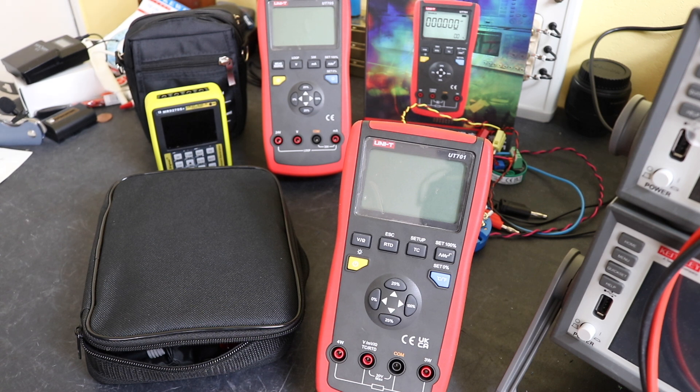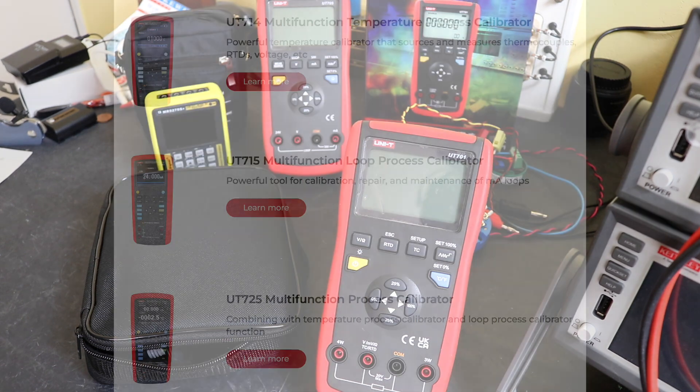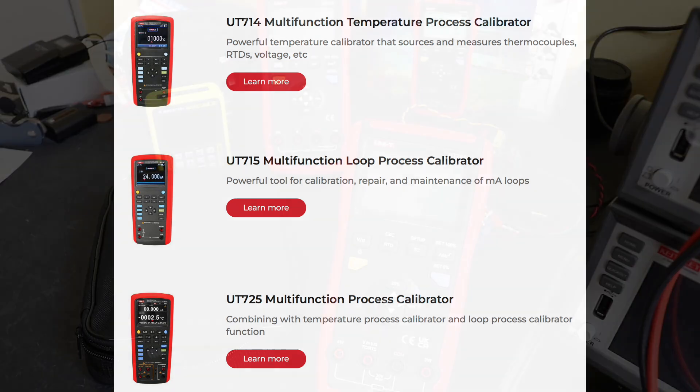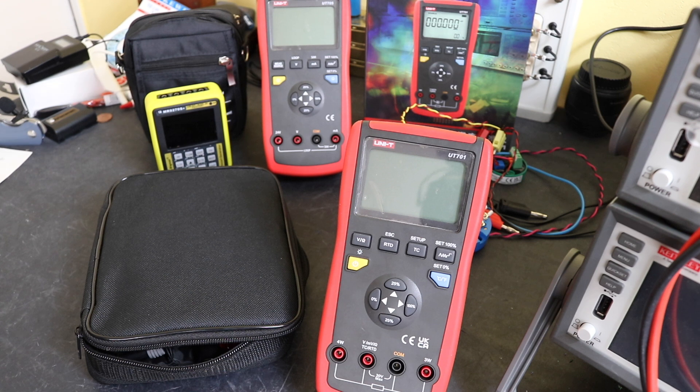The UniT do the 714 and the 715 which again are a pair of units there, a step up from these two. They would give me a source and measurement capability. And they also do the 725 which is the fully combined unit similar to the MR9270S. That gives me measurement and source capability for the thermocouples as well as all the process calibration voltage and milliamps built into it as well. So that could be a different option for you should you prefer that.